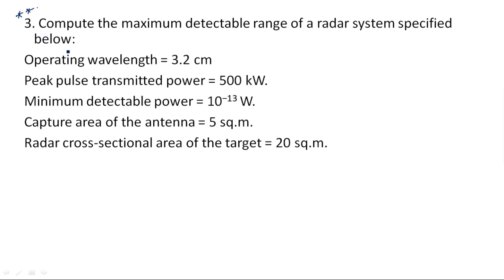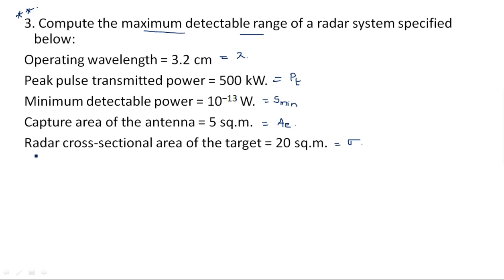The question is: compute the maximum detectable range of the radar system specified below. The operating wavelength λ is given. The peak pulse transmitted power Pt is also given. The minimum detectable signal Smin is given. The capture area (aperture area) of the antenna Ae is given, and the radar cross section of the target σ is given as 20 square meters. Now let us write the formula — we need to find the maximum detectable range.